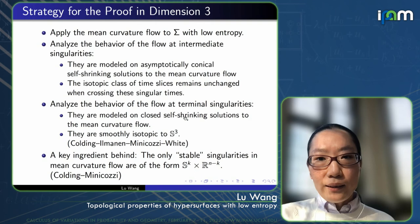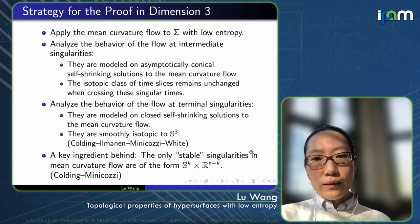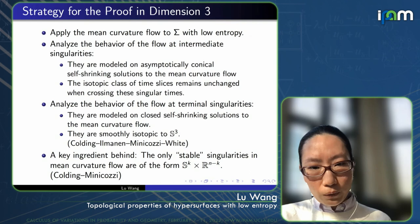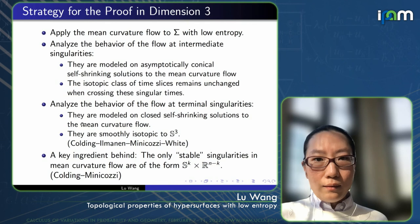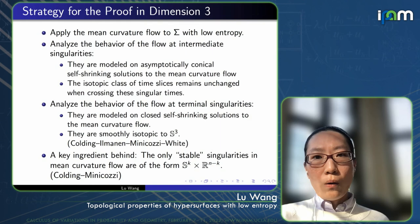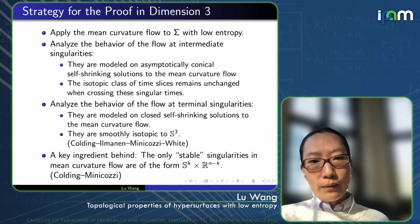The other type of singularity is the terminal singularities. They are modeled on closed self-shrinking solutions to the flow that are smoothly isotopic to the round sphere. This last isotopic statement is actually proved by Colding-Ilmanen-Minicozzi-White. With this knowledge about the behavior of the flow near singularities, one can see that with the help of the flow, one can produce a nice isotopy between the initial hypersurface and the standard round sphere.